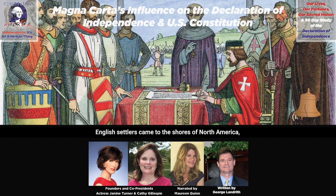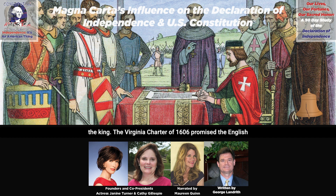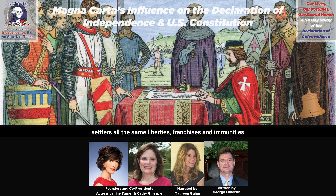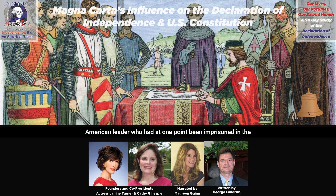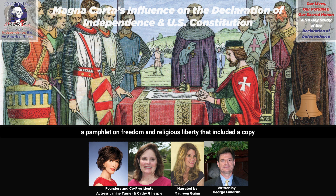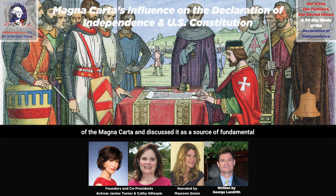As English settlers came to the shores of North America, they brought with them charters under the authority of the king. The Virginia Charter of 1606 promised the English settlers all the same liberties, franchises, and immunities as a people born in England. The Massachusetts Bay Company charter acknowledged the rights of the settlers to be treated as free and natural subjects. In 1687, William Penn, an early American leader who had at one point been imprisoned in the Tower of London for his political and religious views, published a pamphlet on freedom and religious liberty that included a copy of the Magna Carta and discussed it as a source of fundamental law.